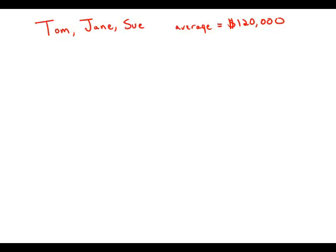Tom, Jane, and Sue each purchased a new house. The average price of the three houses was $120,000. Clearly, these people do not live in the San Francisco Bay Area. What was the median price of the three houses?